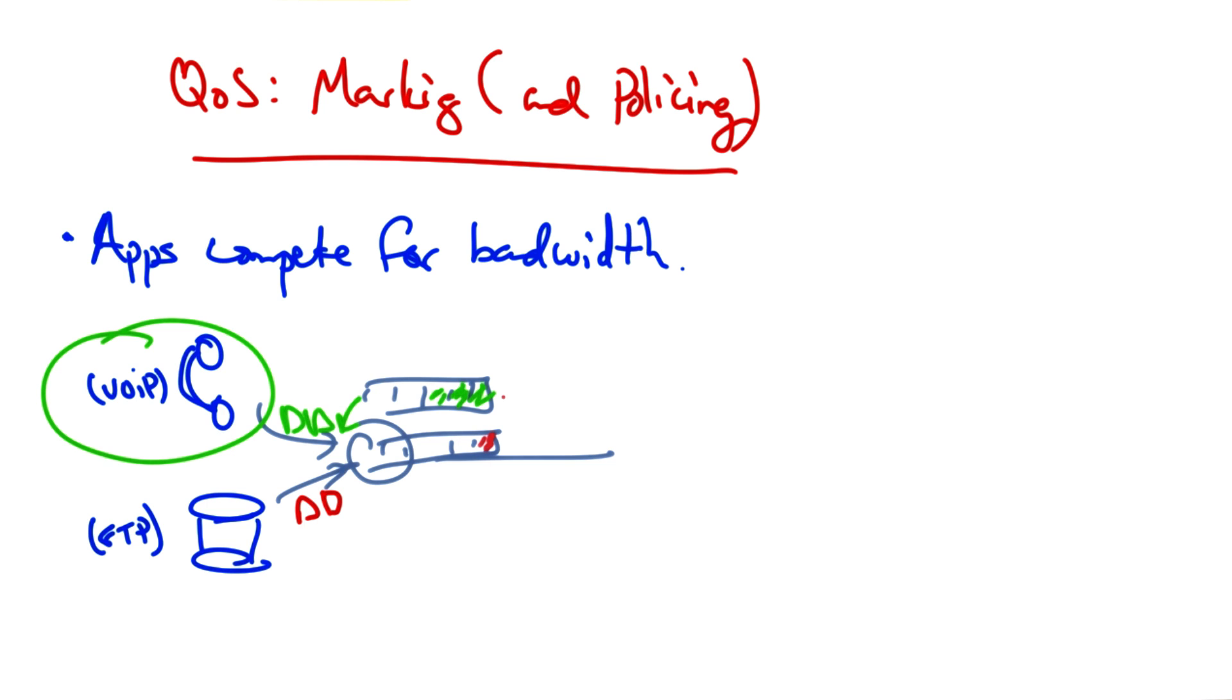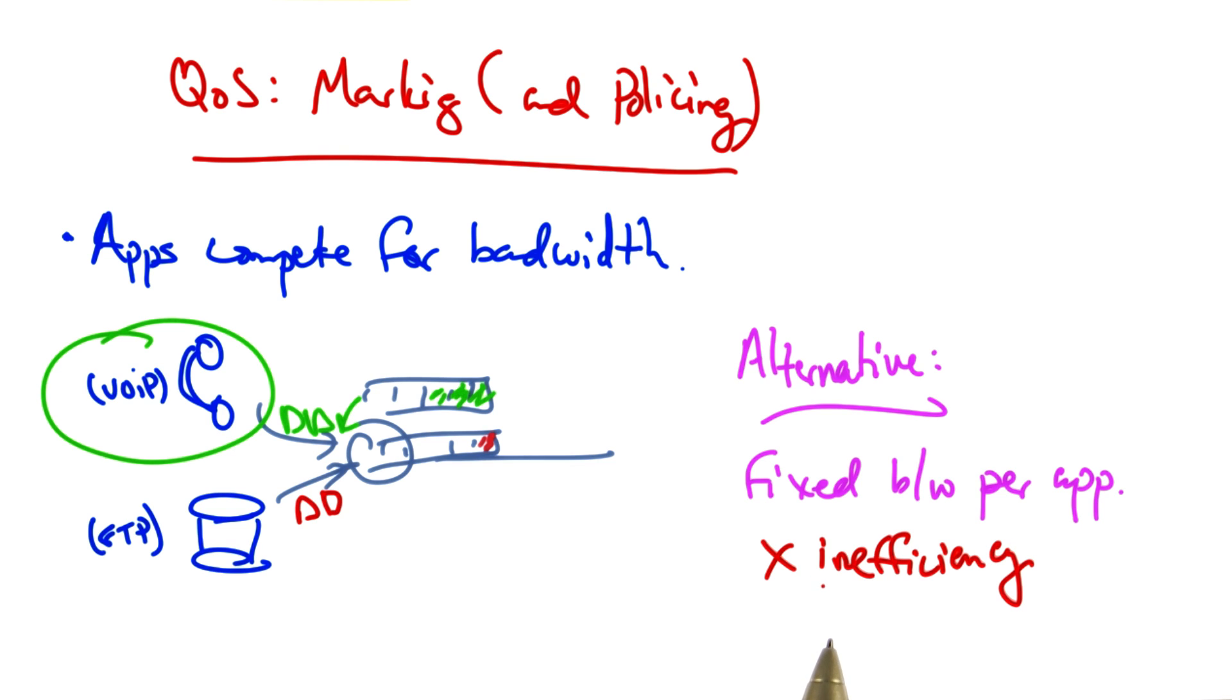that is served less often than the high priority queue. An alternative is to allocate fixed bandwidth per application. But the problem with this alternative is that it can result in inefficiency if one of the flows doesn't fully utilize its fixed allocation.